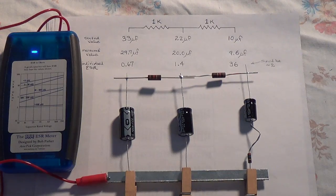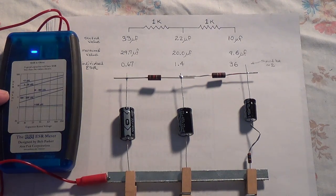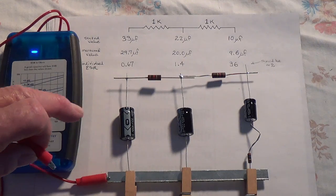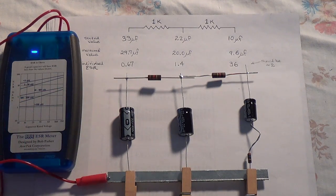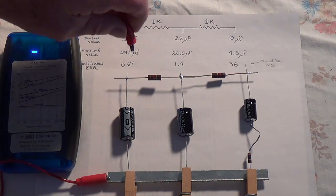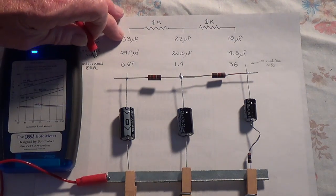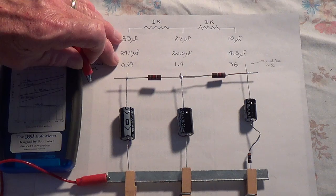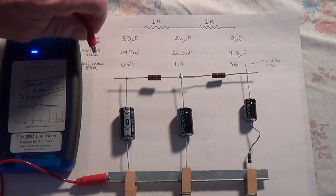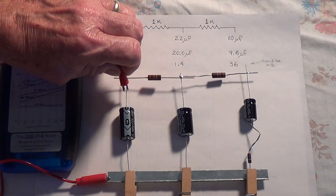Now let's see if our ESR meter can give us good reliable readings on these three individual capacitors where the capacitance meter could not. First let's hook onto the 33 microfarad capacitor which had an ESR reading of 0.67 out of circuit.